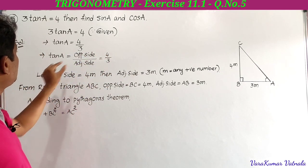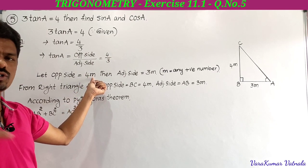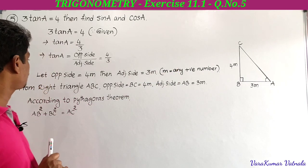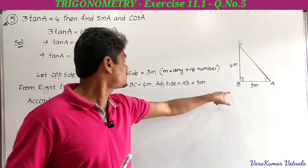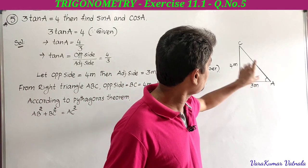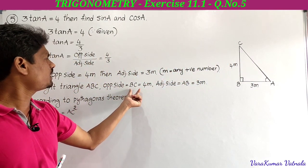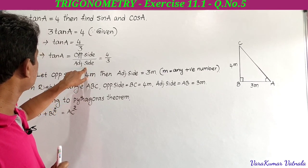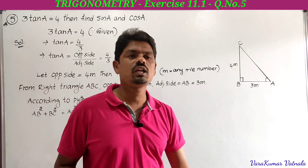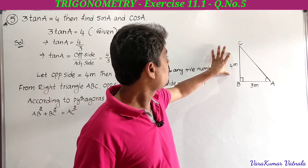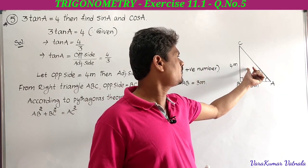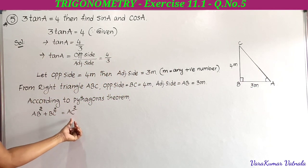Since it is a ratio, let opposite side equal 4m and adjacent side equal 3m, where m is any positive integer. From right angle triangle ABC, opposite side to angle A is BC, so BC equals 4m. Adjacent side to angle A is AB, so AB equals 3m. To find sin A and cos A, we require AC, which we find using Pythagoras theorem.